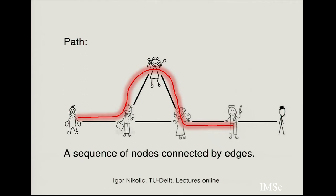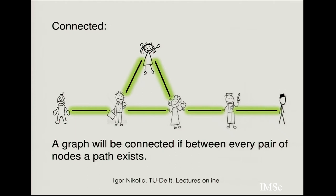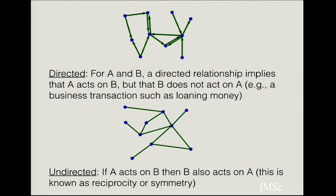A path on a network is a sequence of nodes connected by edges. A graph is connected if between every pair of nodes there exists at least one path — there could be multiple paths, but at least one must exist. You can also have a sense of direction: edges can have arrows on them, implying a unidirectional relationship. If A acts on B but B does not act on A, that is represented as a directed arrow from A towards B, for example a loan transaction. Graphs can also be undirected.